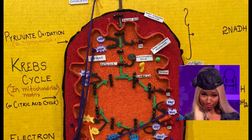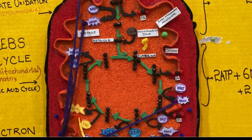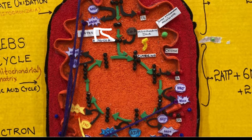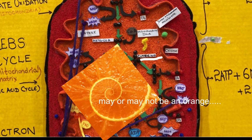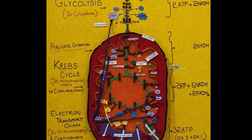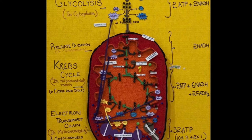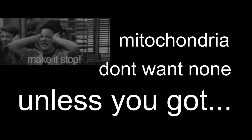The pyruvate reacts to form acetyl CoA. One CO2 is produced and high energy electrons are passed to NAD to produce NADH. Acetyl combines with another compound making citric acid. This acid is broken and releases two carbons. The energy released is captured by five locations of electron carriers.